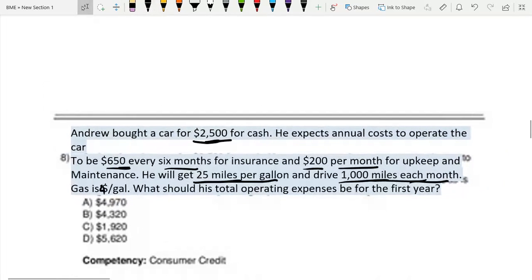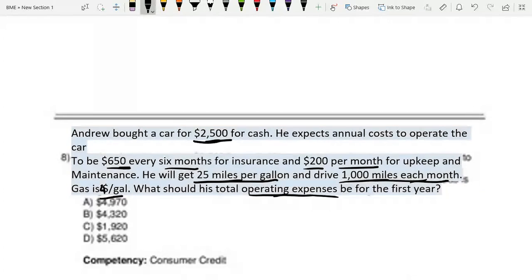$4 per gallon. What should his total operating expenses be for the first year? So operating expenses, this means the $2,500 is irrelevant, but the other information is important. So we'll pay $650 every six months, so that's 650 times 2, which is 1,300. Then we also have $200 per month for upkeep, so that's 200 times 12, which is 2,400.